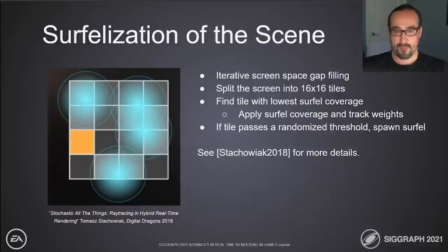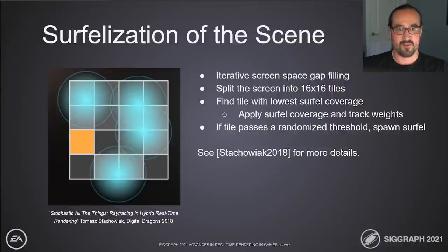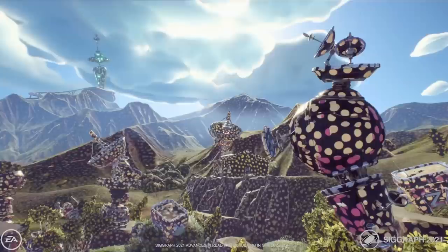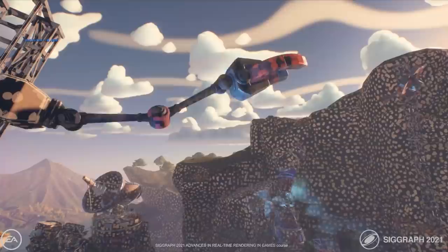The actual spawning algorithm works by filling gaps as they are seen in screen space. The screen is split into 16 by 16 tiles. Each tile finds the texel which has the least coverage currently. If this coverage passes a randomized threshold, we spawn a new surfel using the geometric information from the G-buffer. Once a certain amount of coverage is achieved, no more surfels are spawned in that tile. For more details on the spawning itself, I recommend Tomas' talk from 2018.